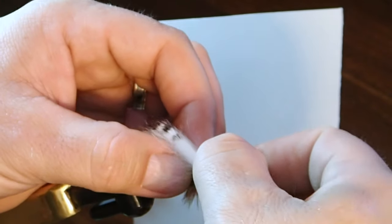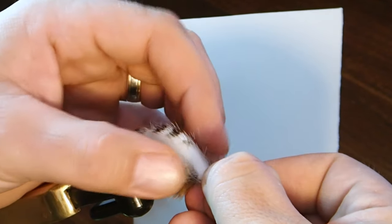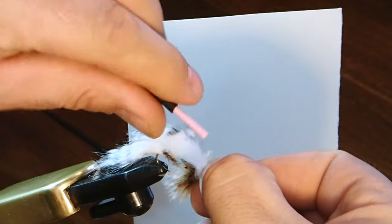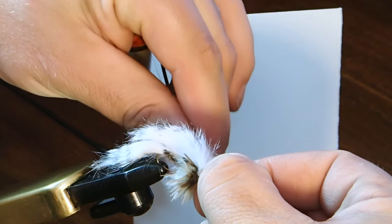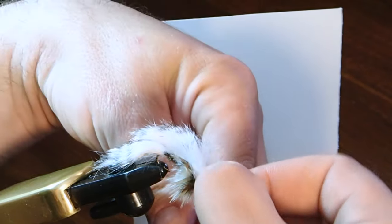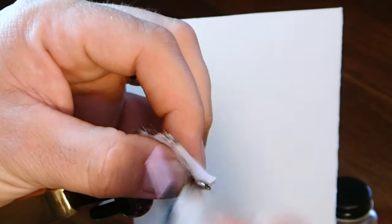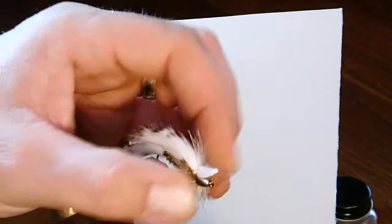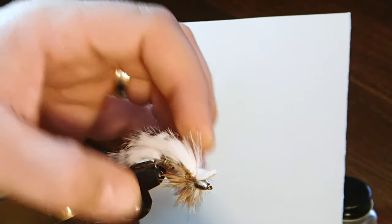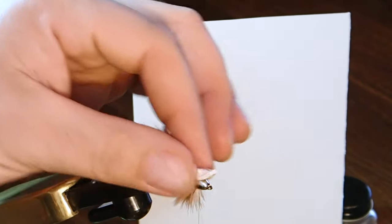Now it's time to just secure the top of that zonker strip down. Notice on my right hand I'm pulling that tight, with my left hand I'm tying that down. I want to get some tension on that strip, so that it doesn't get loose through the middle. We don't want it to get loose at all through this center section here.